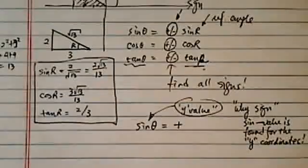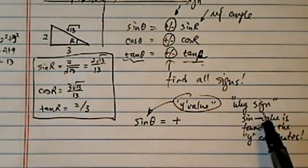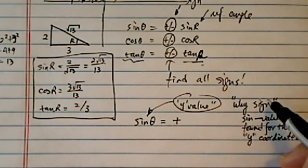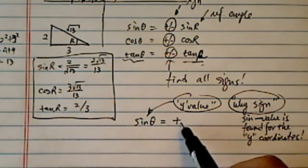Okay, so I hope you can read the writing. It's pretty small. It's a positive. So here it says this little quotation mark is how I remember. Sine value is always determined by the y coordinate. So in quadrant 2, it's a positive.